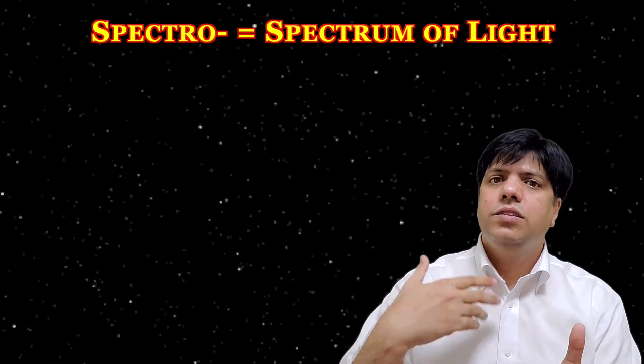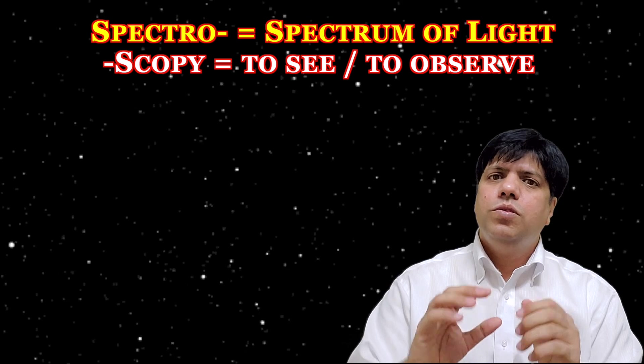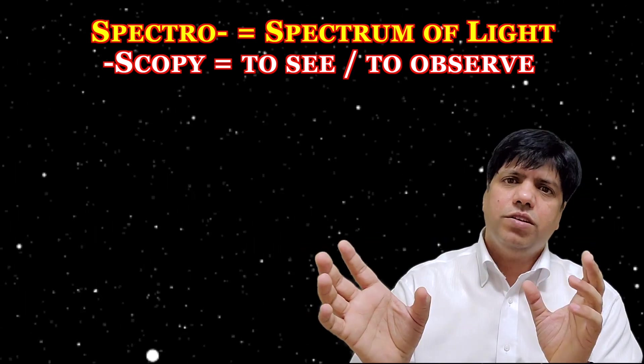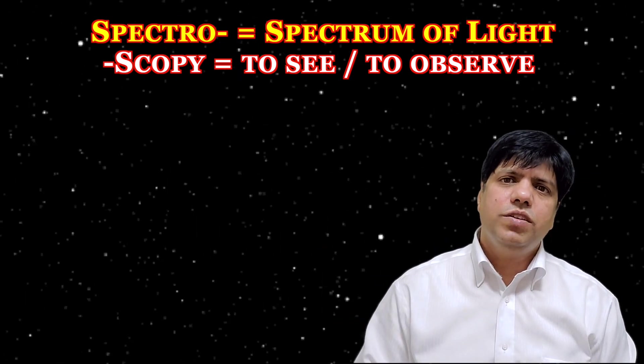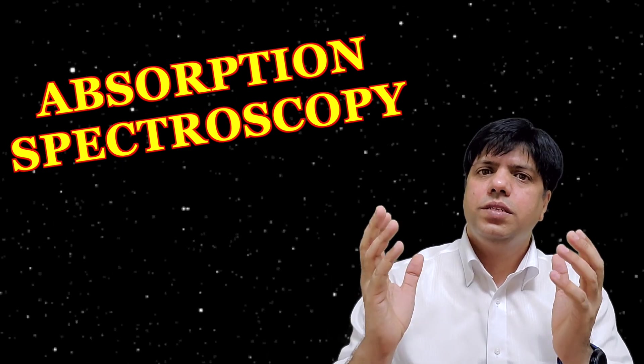What is spectroscopy? Spectrum of light, scoppy to see. Now we have two kinds of spectroscopy. First is what we call absorption spectroscopy. Now what happens if you take light and pass it through a prism?